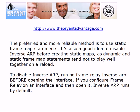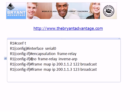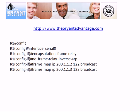The preferred and more reliable method is to use static frame map statements. If you're going to use static mappings, it's a very good idea to disable inverse ARP beforehand, because if you have a router reload with both static mappings and inverse ARP running on the same interface, they tend not to play well together and you can get undesirable results when the router comes back up. To disable it, run 'No Frame Relay Inverse ARP' on the interface before opening it, since inverse ARP runs by default.